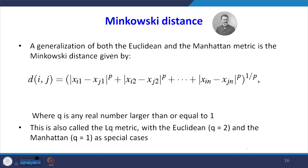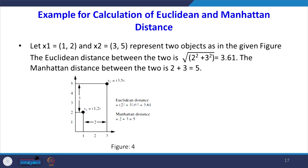A generalization of both Euclidean and Manhattan metrics is the Minkowski distance, given by: d(i,j) = (|xi1 - xj1|^p + |xi2 - xj2|^p + ... + |xin - xjn|^p)^(1/p), where p is any real number greater than or equal to 1. This is also called the Lp metric. For Euclidean distance, p = 2, and for Manhattan distance, p = 1, as special cases.